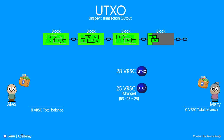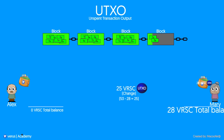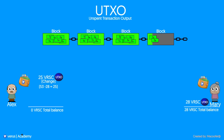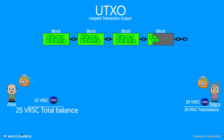I will explain how that all works in another animation. All that is left to do is to send the 28 Verus coins to Mary's wallet and send the change of the transaction back to Alex's wallet. And this, of course, is all done automatically.